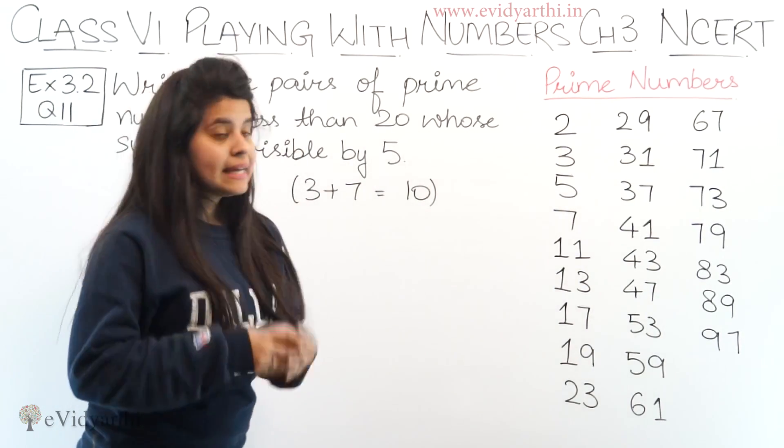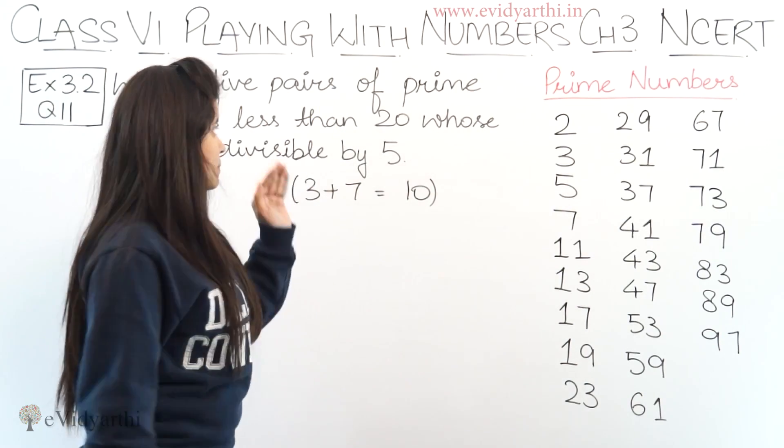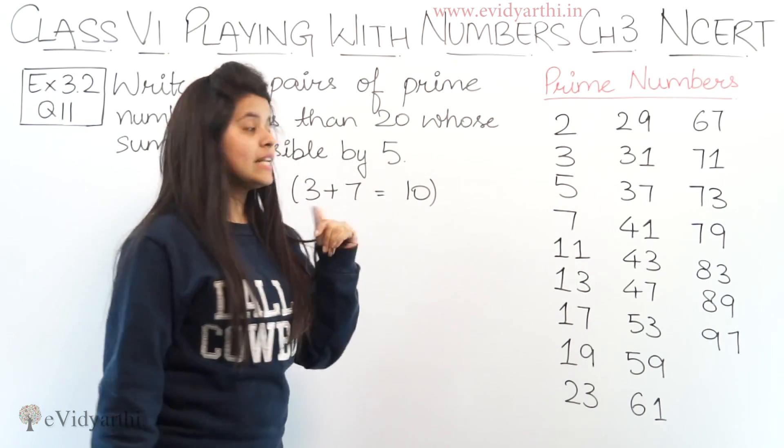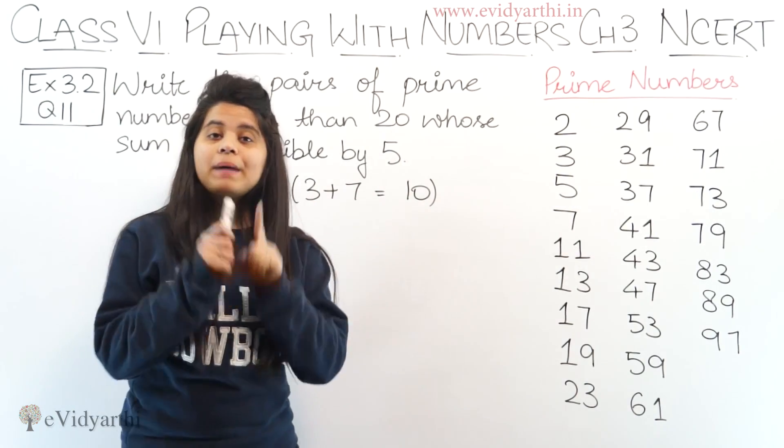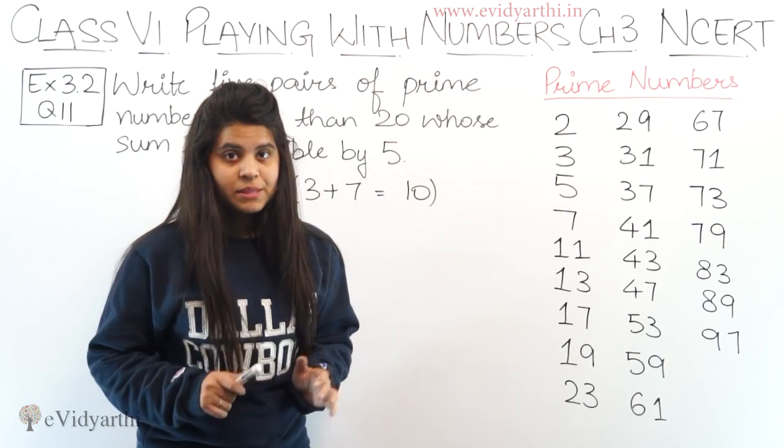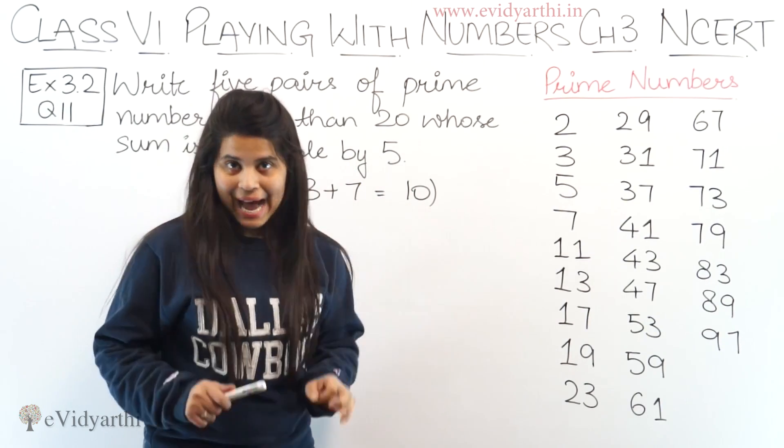Now first let's see what the question is asking. The question says we need to write 5 pairs of prime numbers less than 20 whose sum is divisible by 5. When we add those two numbers, the result should be divisible by 5. Divisible by 5 means it should be in the 5 times table.